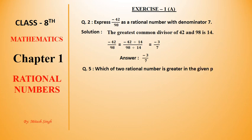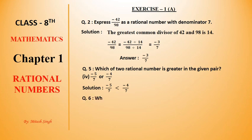Which of the two rational numbers is greater in the given pair? First we check if the denominators are the same. If they are the same, we check their numerators — the bigger numerator means the bigger rational number. The numerators are minus 5 and minus 4. Since minus 4 is greater than minus 5, minus 4 upon 7 is greater than minus 5 upon 7.